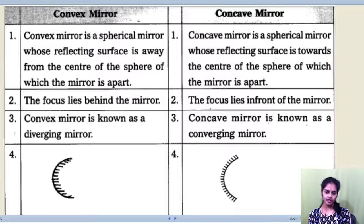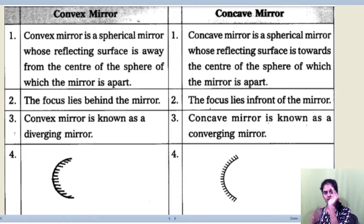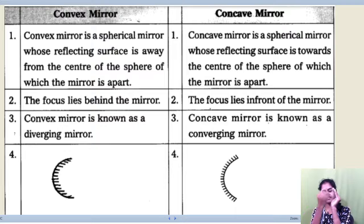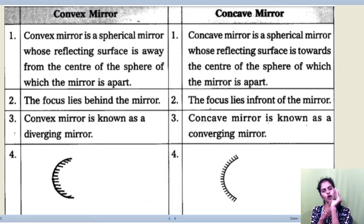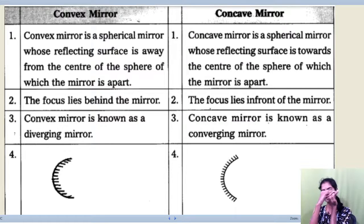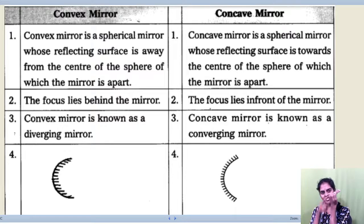What is a convex mirror and concave mirror? A concave mirror is one which is like a cave inside — this is the shiny or mirror part. A convex mirror, on the other side, is the reverse of it; it is bulged outside. This is the shiny part.